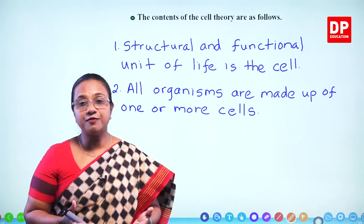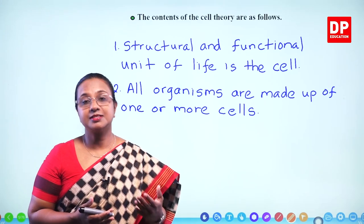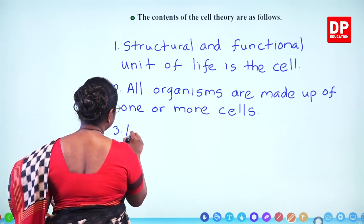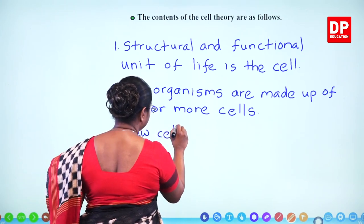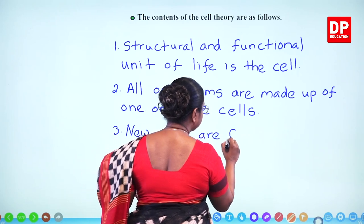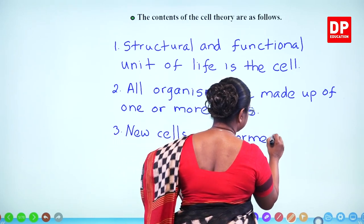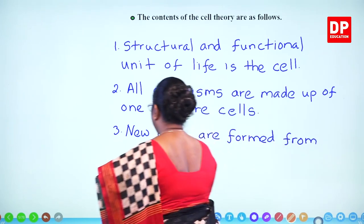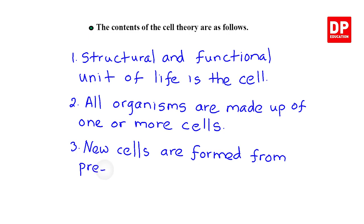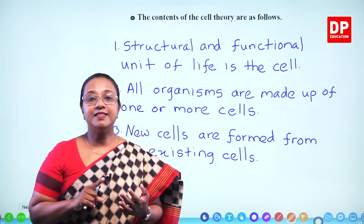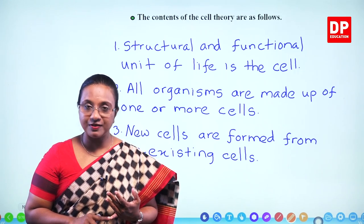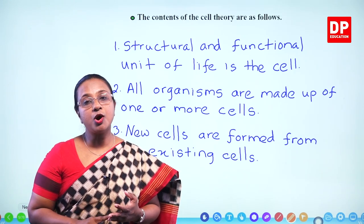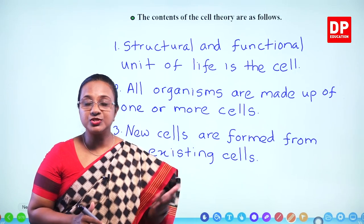So that is the third content of the cell theory: new cells are formed from pre-existing cells. Remember that Robert Hooke is the scientist who identified the cell, and Schleiden, Schwann and Rudolf Virchow proposed the cell theory.